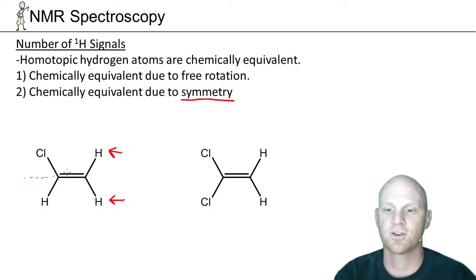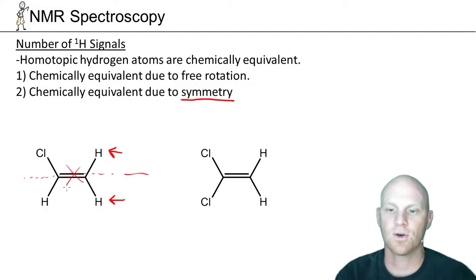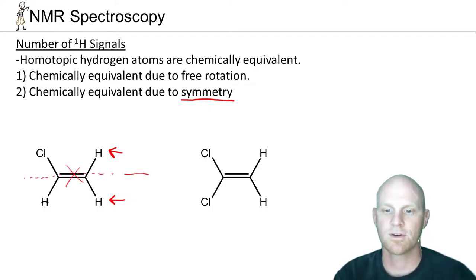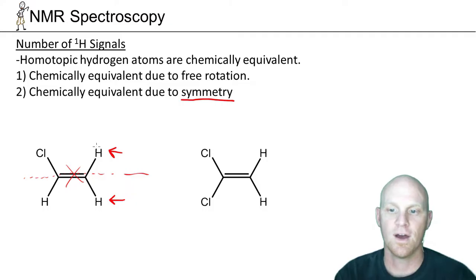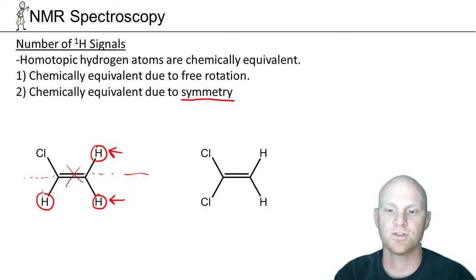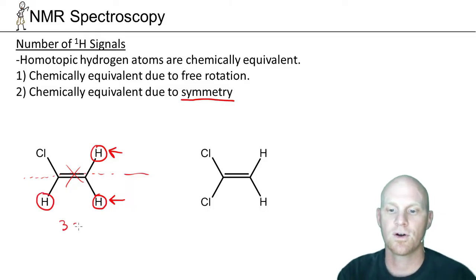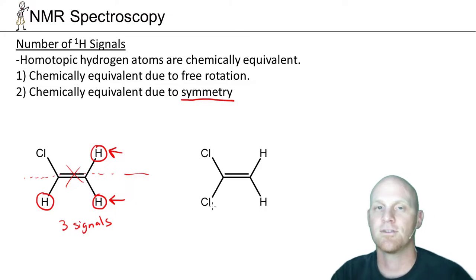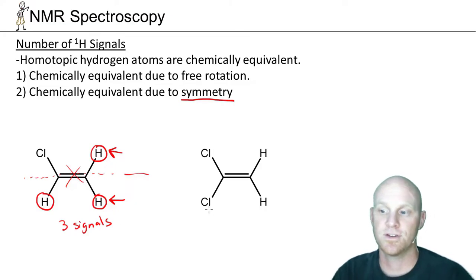In this case, if we try to draw a line of symmetry, there is none — the chlorine versus the hydrogens breaks any symmetry. So these two hydrogens are not chemically equivalent and will give two different signals. With the third hydrogen as well, this molecule ends up with three signals and three unique hydrogen environments.